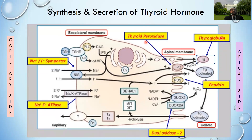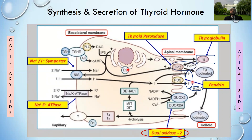As soon as the iodide reaches the apical membrane of the thyrocyte it undergoes a two-step process called organification. First it is oxidized to iodine; next is incorporation of iodine into the tyrosine residue of thyroglobulin. The enzyme dual oxidase 2, located at the apical area, generates hydrogen peroxide which is utilized by thyroid peroxidase for the oxidation of iodide to iodine.